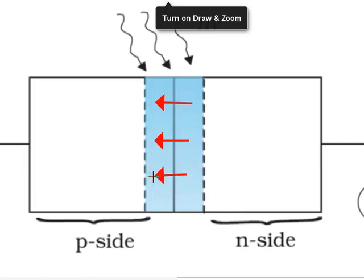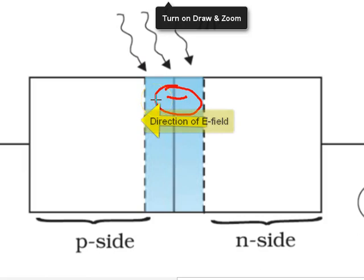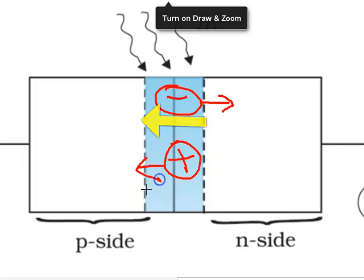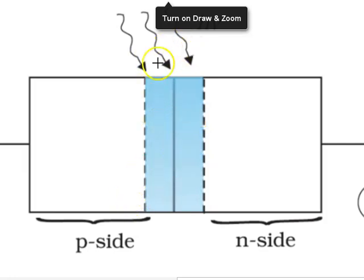So any electron here will experience a force opposite to the direction of field in this direction, and any hole here will experience a force in the direction of electric field.